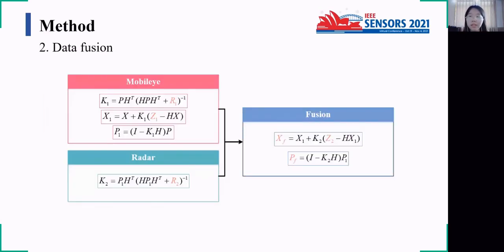In the data fusion stage, the algorithm uses the equation about state update for fusion. We use the formulas in the figure for data fusion according to the Kalman filter. The finally obtained XF and PF are the fused state value and the covariance matrix. And the parameters in the noise matrix are adjusted according to the accuracy of range and speed from different sensors.